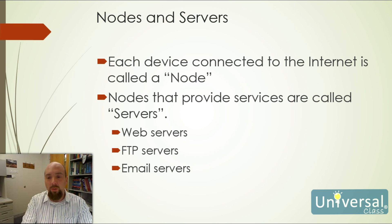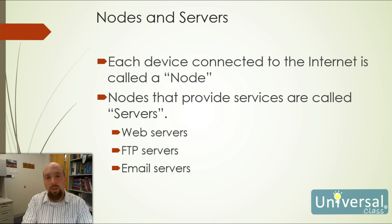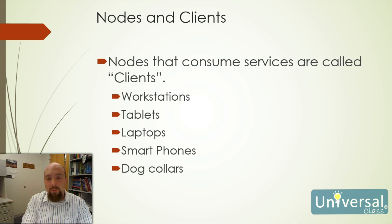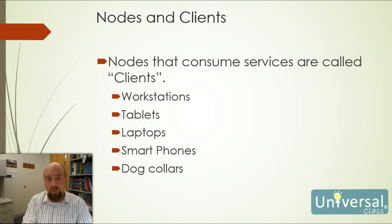We have different types of nodes. We have some that are called servers — web servers, file servers, and so forth. For the internet we're going to work with web servers, FTP servers, email servers, and application servers. A device that consumes resources on the web is called a client — workstations, tablets, laptop computers, smartphones, even dog collars that connect to the internet. These are all types of clients that consume resources.